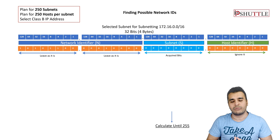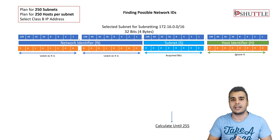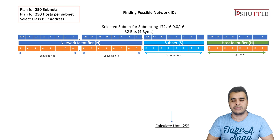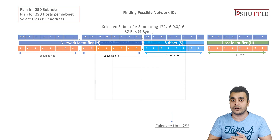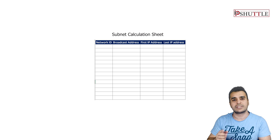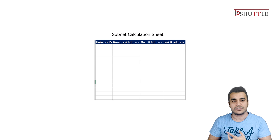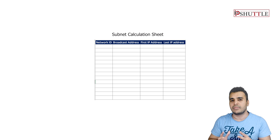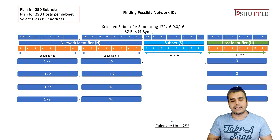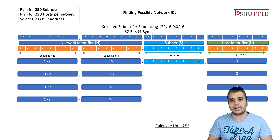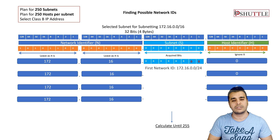The third octet will be changed by flipping each bit one by one to get all subnets until it is completely exhausted at a maximum value of 255. Let's calculate the first few. Useful columns to track are: network ID, broadcast address, first usable IP address, and last usable IP address. With the third octet all zeros, our first subnet ID is 172.16.0.0/24.